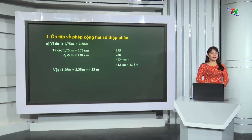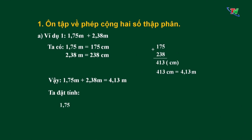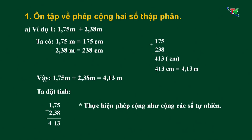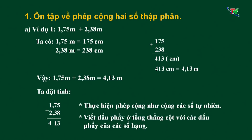Để thực hiện phép tính này nhanh hơn, cô sẽ hướng dẫn cách đặt tính: Ta viết 1,75, sau đó viết 2,38 dưới số hạng 1,75, sao cho các chữ số ở cùng một hàng thẳng cột với nhau. Lúc này ta bắt đầu thực hiện cộng như cộng số tự nhiên, cộng từ phải sang trái: 5 cộng 8 bằng 13, viết 3 nhớ 1; 7 cộng 3 bằng 10, thêm 1 bằng 11, viết 1 nhớ 1; 1 cộng 2 bằng 3, thêm 1 bằng 4, viết 4. Sau khi cộng xong, ta viết dấu phẩy ở tổng thẳng cột với các dấu phẩy của các số hạng. Kết quả tìm được là 4,13m.